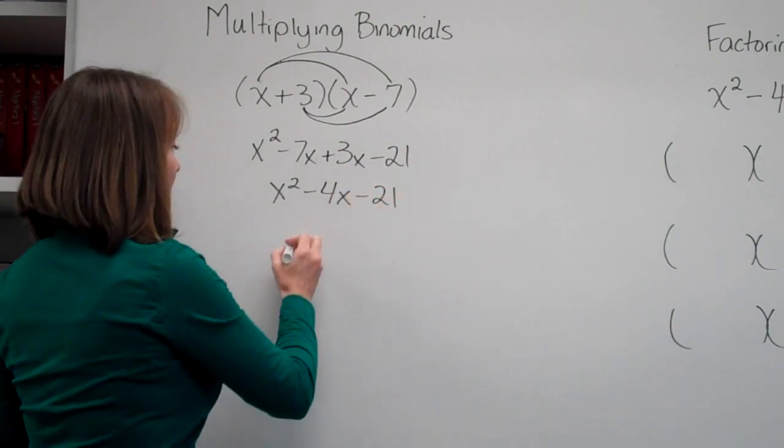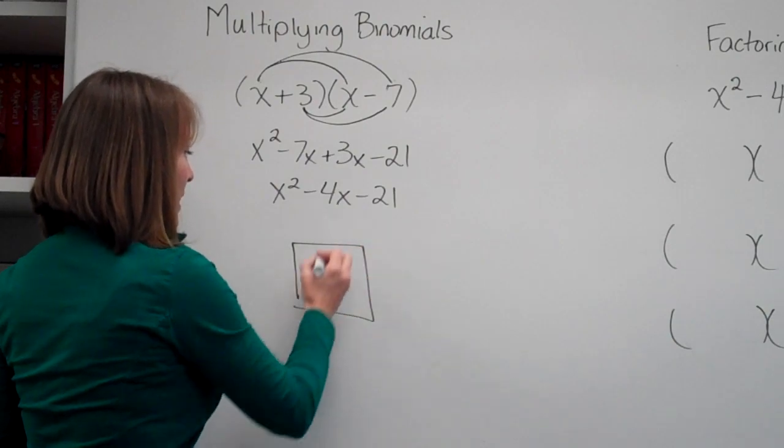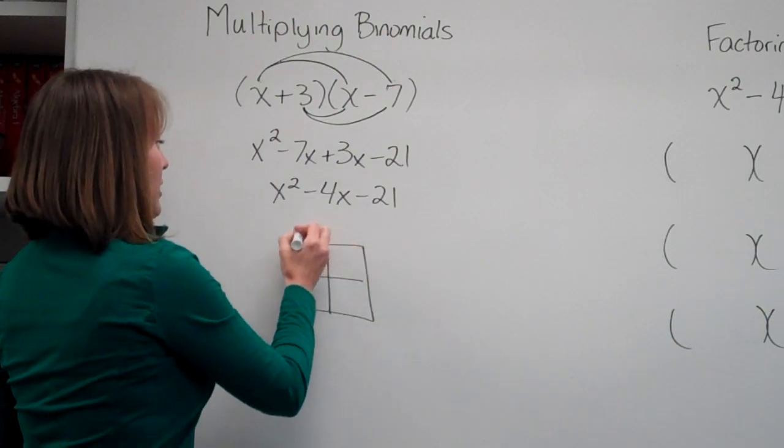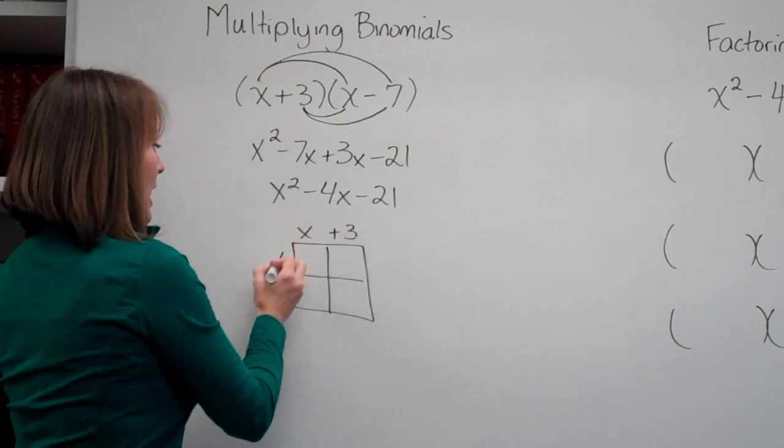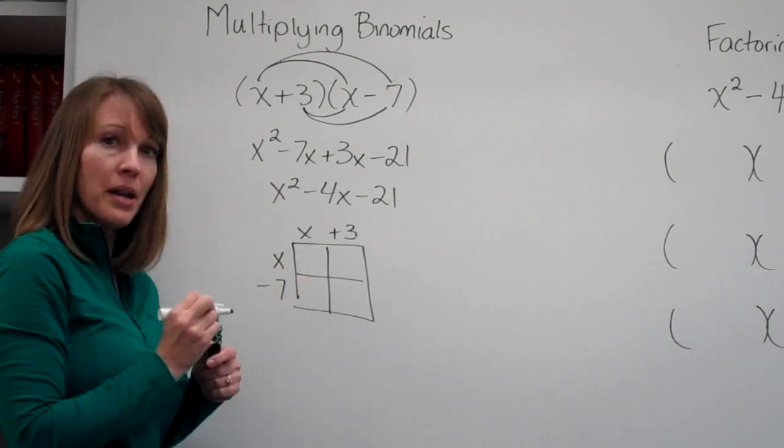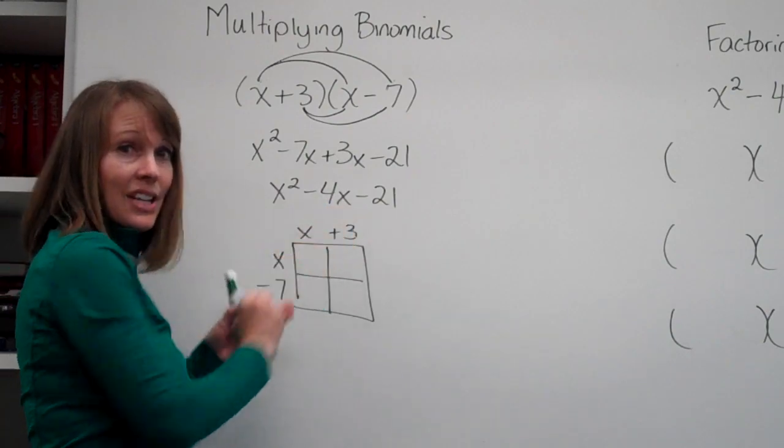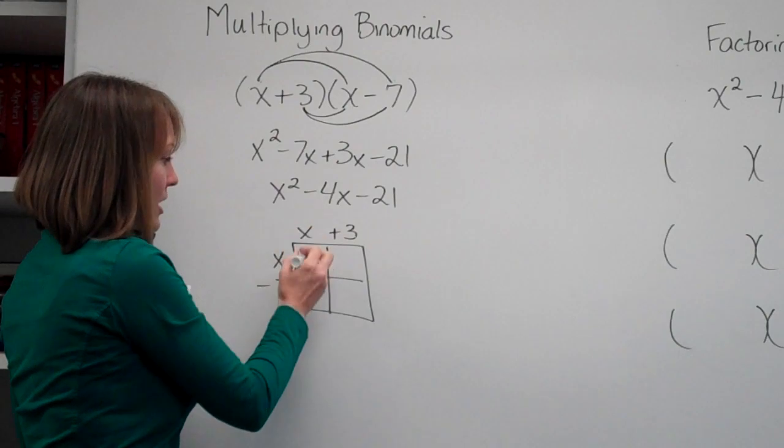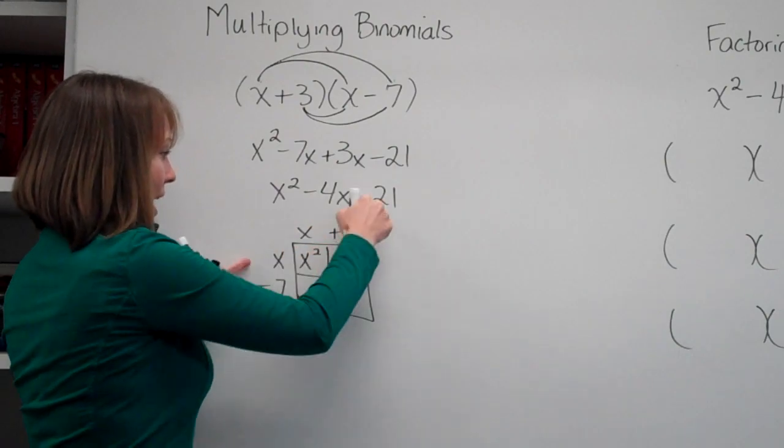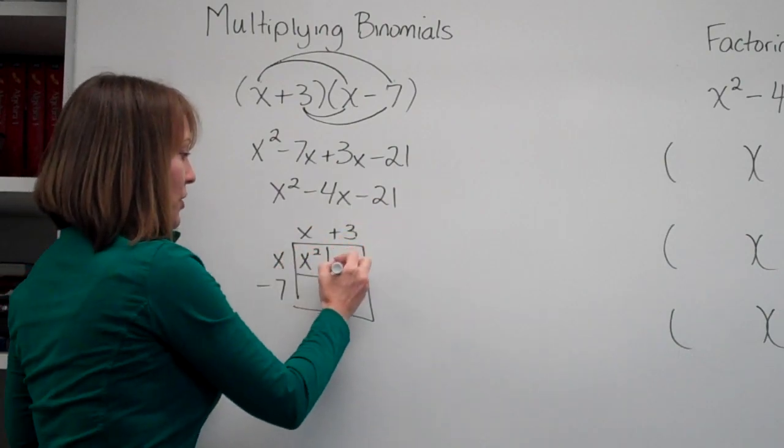The alternate way we've done it is the box method. We wrote x plus 3 on the top, x minus 7 on the bottom. We multiplied each dimension of the box, so x times x was x squared, x times 3 was positive 3x.